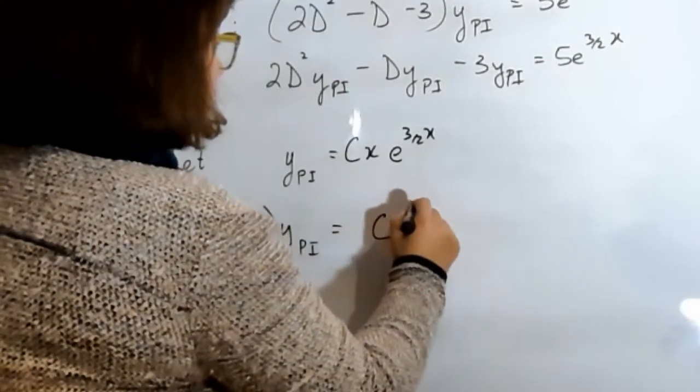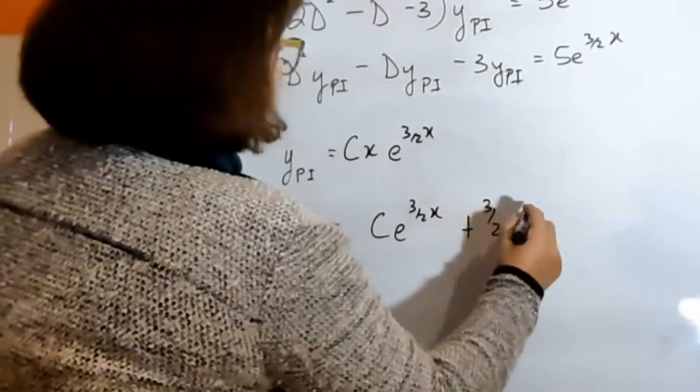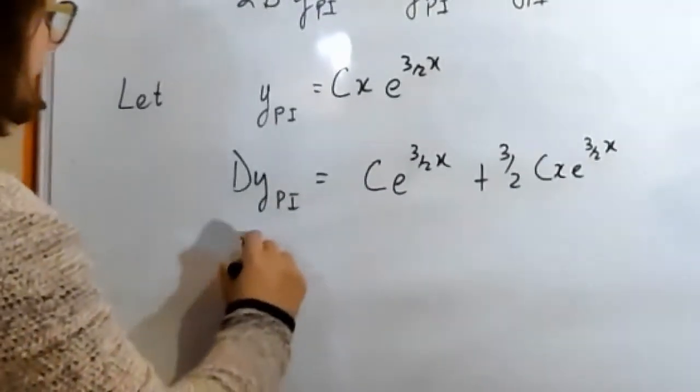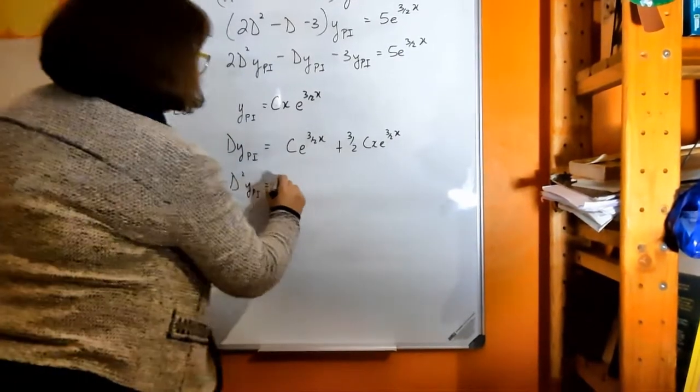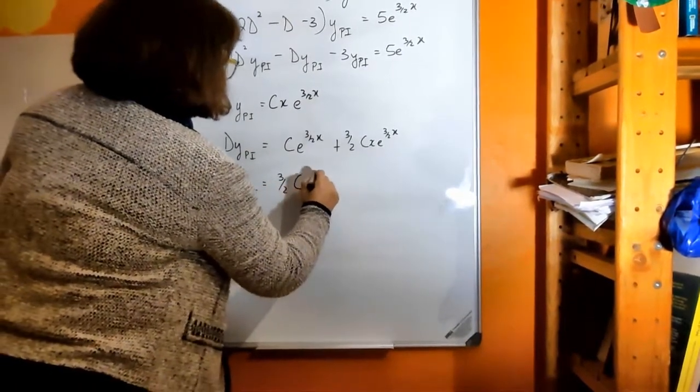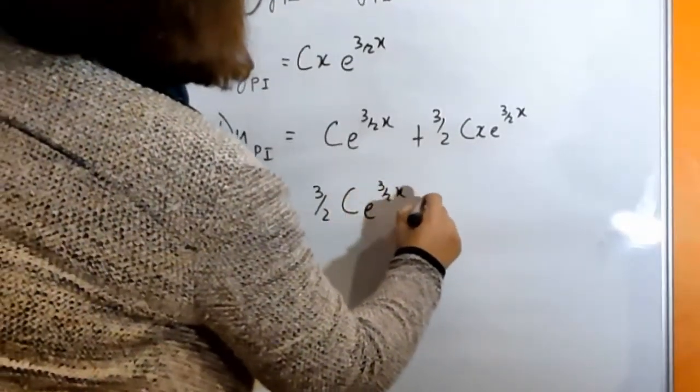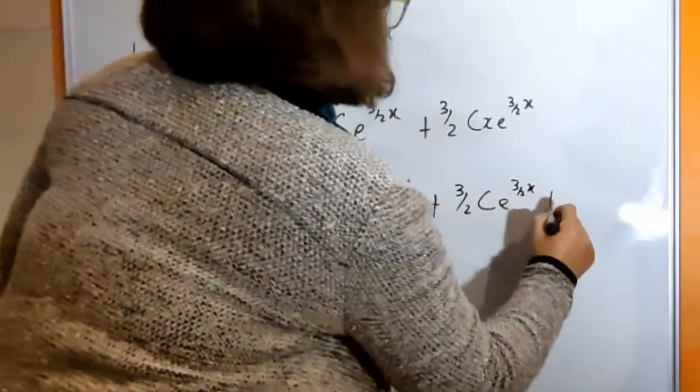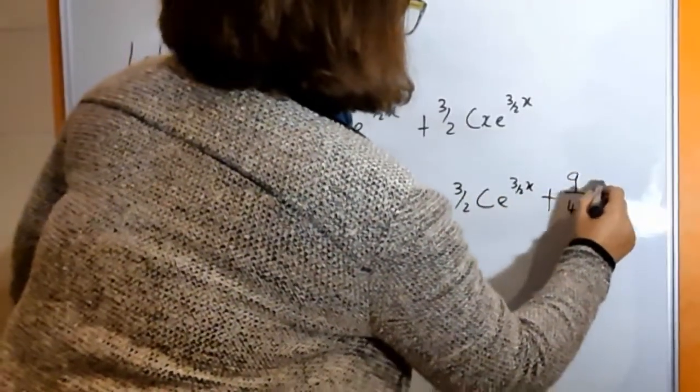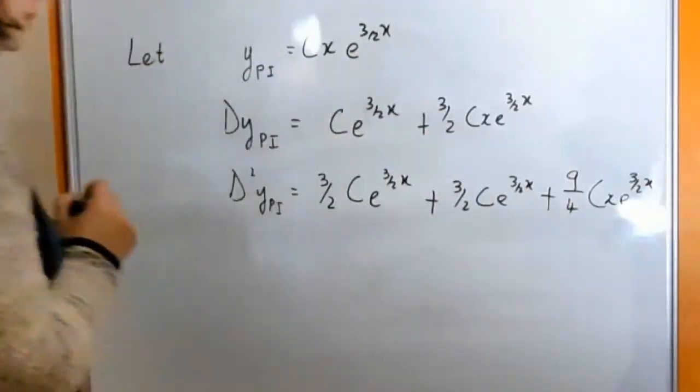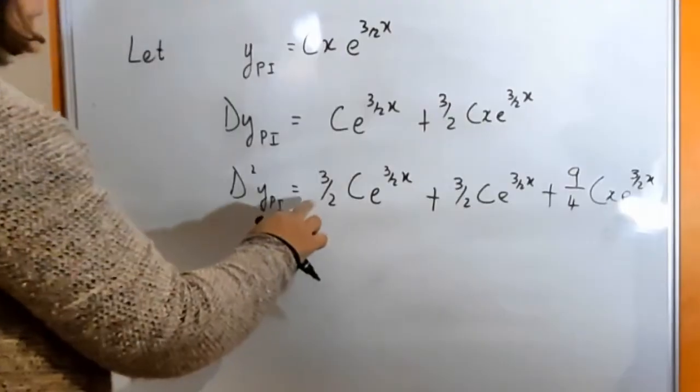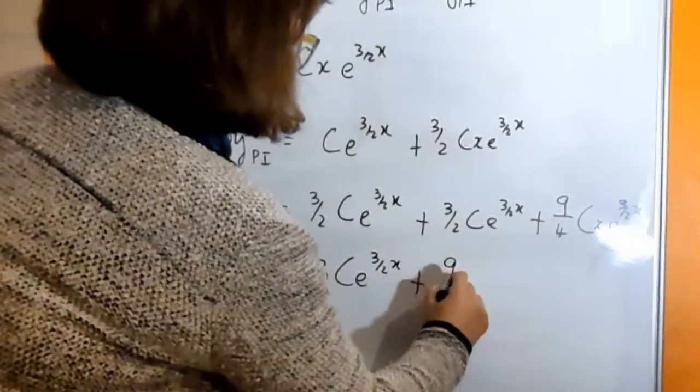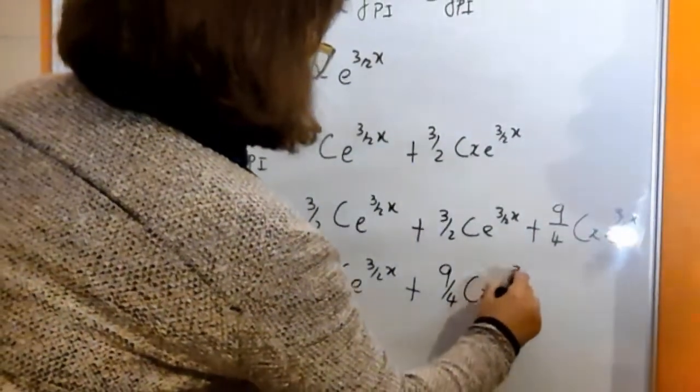So we get c e to the 3 over 2x plus 3 over 2 x c e to the 3 over 2x. Right, and then the second derivative is going to be 3 over 2 c e to the 3 over 2x plus... and that is going to be 3 plus 3, 6 over 2.